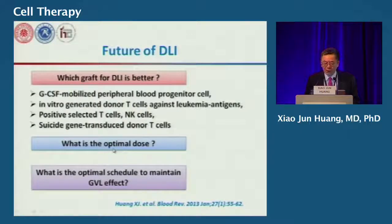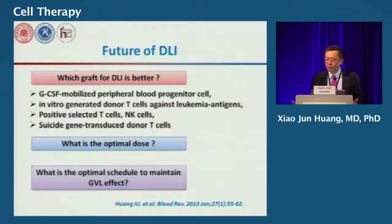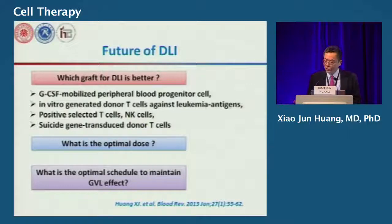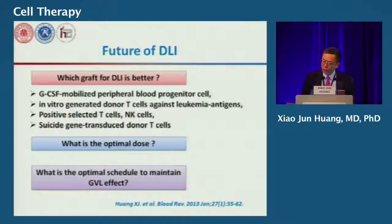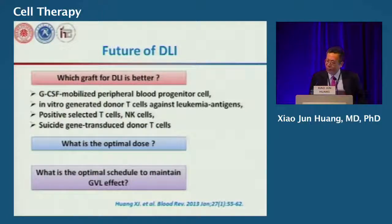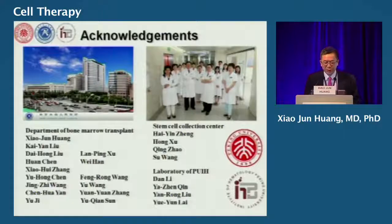We still need to answer: what is the optimal dosage? In our protocol we use a fixed dose of mononuclear cells with a very high T-cell number — can we reduce that T-cell dose? What is the optimal schedule for maintaining graft-versus-leukemia effect, and the optimal time point for prophylactic or preemptive donor lymphocyte infusion? By answering these questions, donor lymphocyte infusion will become safer and more effective. I would like to acknowledge my colleagues for their contributions to this work. Thank you for your attention.